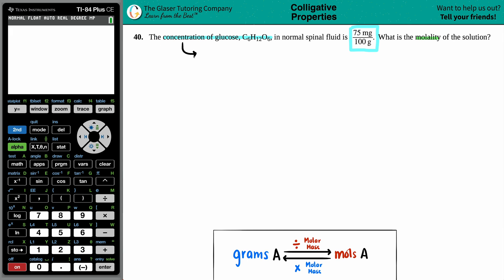We know that there's another word that we use in chemistry that's another word for concentration, and that is molarity. So by saying that this is a concentration, 75 milligrams per 100 grams, we know that this is a molarity value.